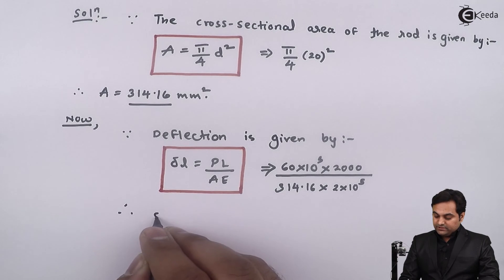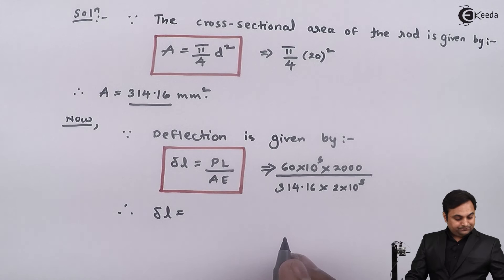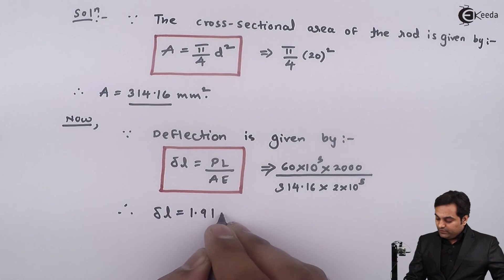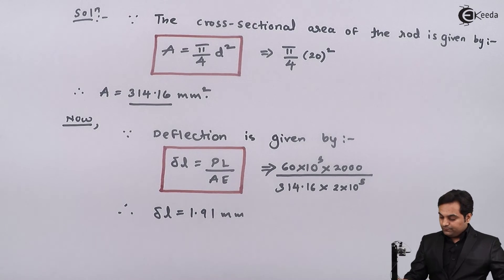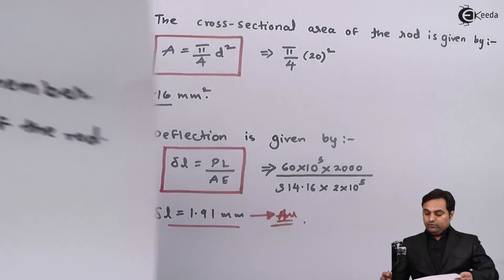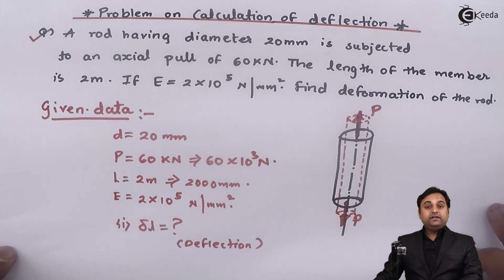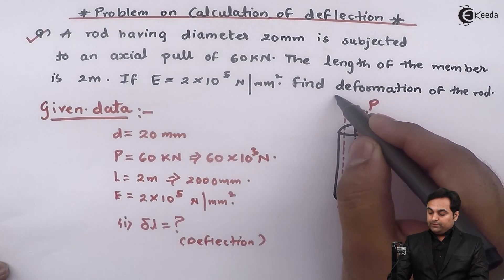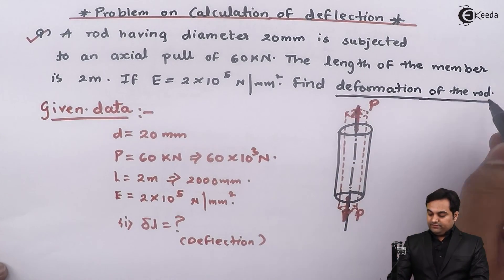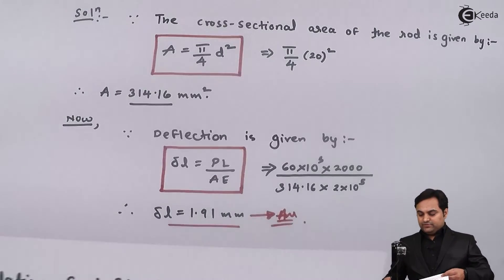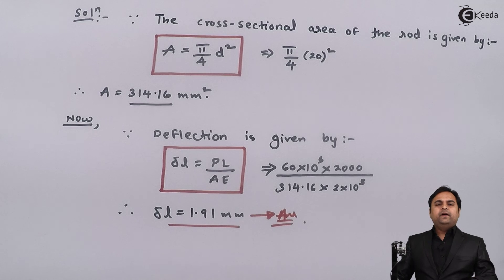So from this I will get the answer of deflection, and my answer is 1.91 mm. So here, if we look into the question, they were telling us to calculate the deformation of the rod. And deformation of the rod means the deflection of the rod, which we have calculated, and that comes out to be 1.91 mm. And with this we complete the problem.